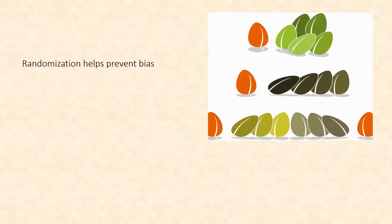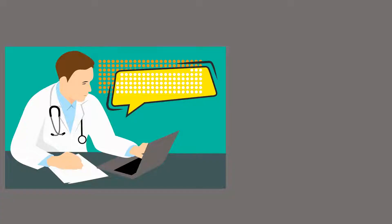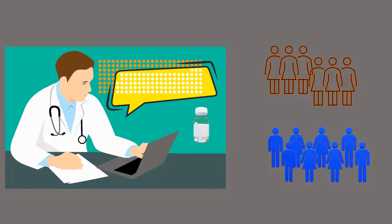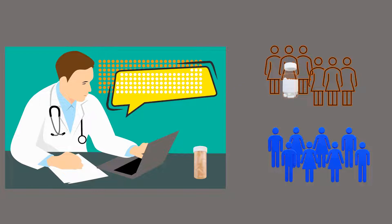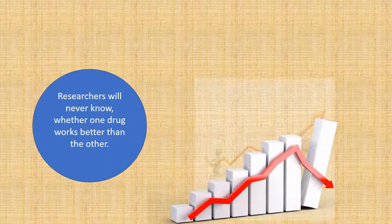Randomization helps to prevent bias. Bias occurs when trial results are affected by human choices. If randomization is not used, the investigator may unintentionally give the new drug to the sicker person or the standard drug with which they have more experience. This will affect the results and researchers will never know whether one drug works better.